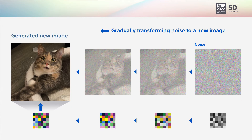Practical images have large pixel size, which means dimensions are large. This may lead to expensive training costs. Instead, we can compress images into smaller dimensional representations.